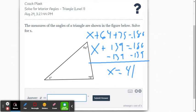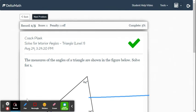Again, in Delta Math, we're just going to enter 41. It already has x equals. Submit that. Boom.